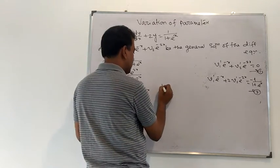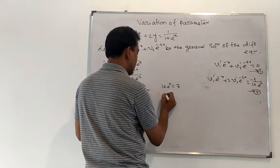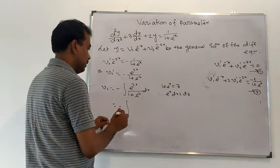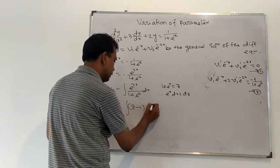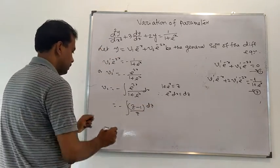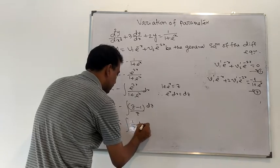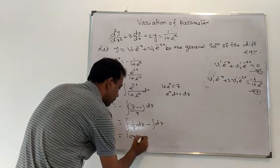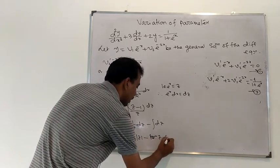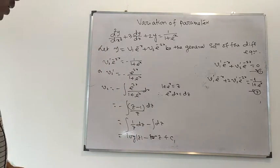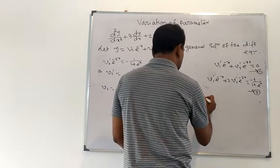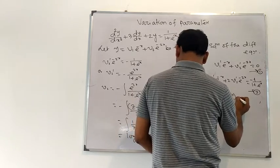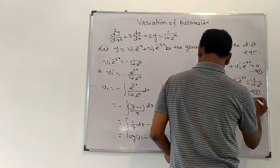To integrate v2' = e^(2x)/(1 + e^x), we use the substitution 1 + e^x = z, so e^x dx = dz. The integral becomes ∫(z−1)/z dz = ∫(1/z)dz − ∫dz, which equals ln(z) − z + c1. Substituting back, v2 = ln(1 + e^x) − (1 + e^x) + c1.